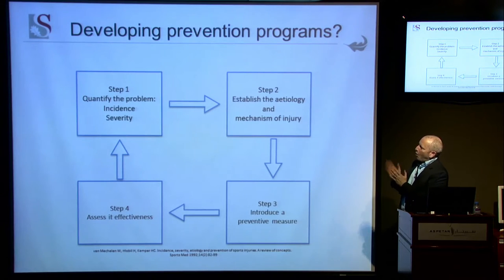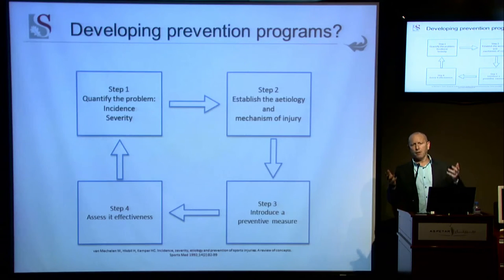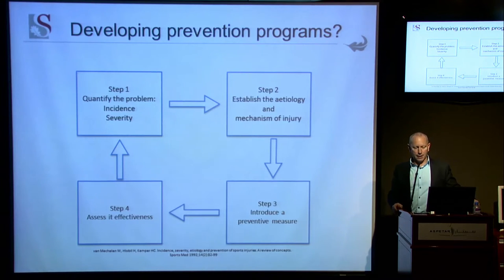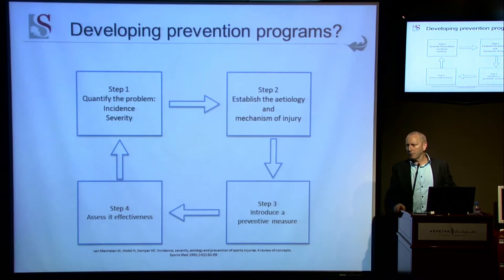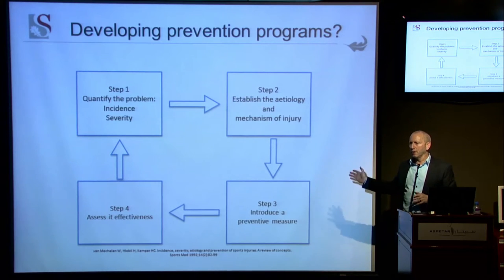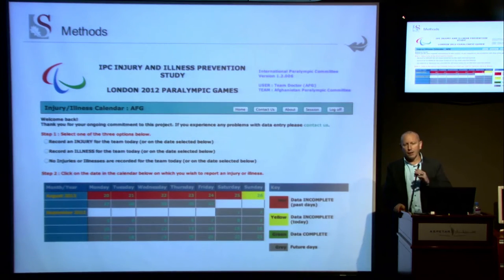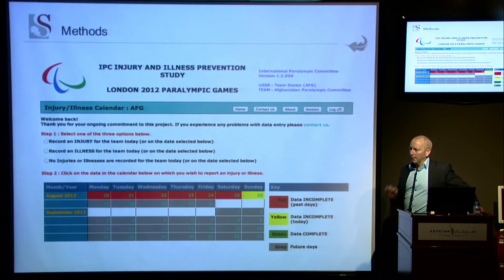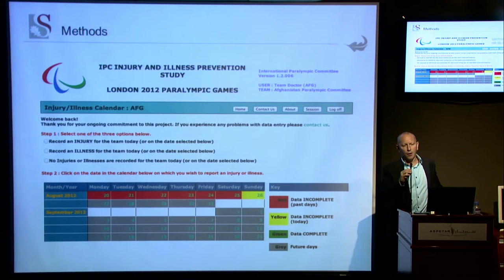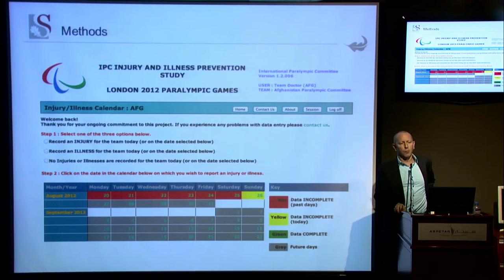To review these steps: step one is to quantify the problem — which conditions are important in our Paralympic population and how severe are they? Step two is to look for mechanisms and discern risk factors. Once we've isolated risk factors, we can introduce a preventative measure and keep measuring epidemiological variables to ensure what we're doing makes a difference. Although some early 1990s studies addressed injuries in Paralympic athletes, there has been very little formal study of illness in this population. So we took the opportunity in London to measure for the first time, in an accurate way, what happens with Paralympic illnesses.